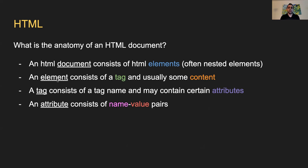An HTML document consists of HTML elements, often nested elements. A document is just a bunch of elements on the page. An element can be broken down into a tag and usually has some content. When someone says tag versus element, you should know the difference. An element is a tag with content together. A tag consists of a tag name and may have various attributes - like properties that give the tag more definition.